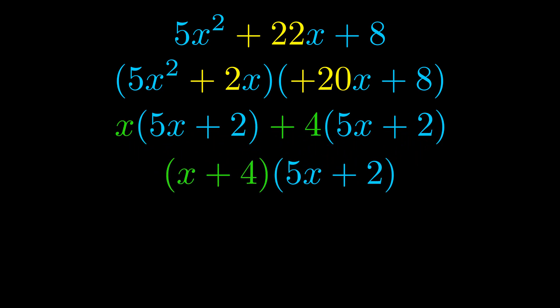Notice also how what remains inside of the parentheses is the same in both cases. The blue values are the same. Those blue values will become one of our factors and we will combine the two green values, the GCFs that we pulled out, to get the other one. And that is our fully factored equation.